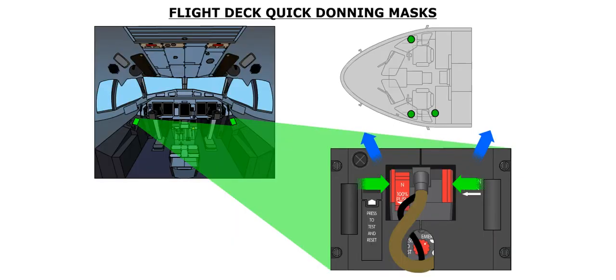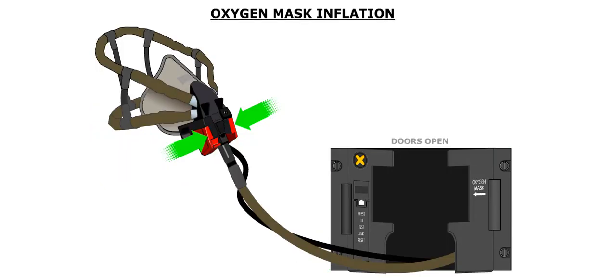The flight deck receives oxygen through quick donning masks. These oxygen masks are stowed in a receptacle adjacent to each pilot's seat. In order to don the mask, squeeze the two red tabs together and pull the mask out of its container. The flight crew oxygen mask is designed so that it can be donned with one hand. Oxygen pressure is used to inflate the harness. Squeezing the red tabs will inflate the harness, but not until the mask is removed from the receptacle.